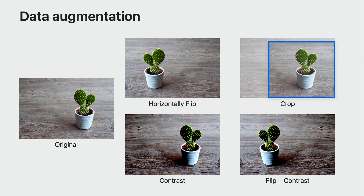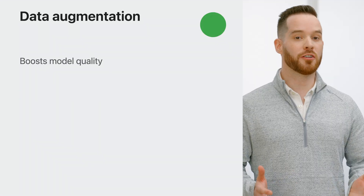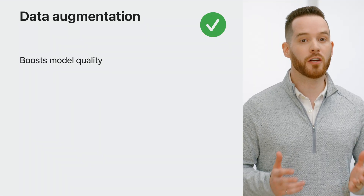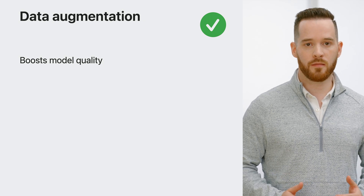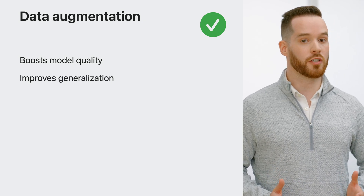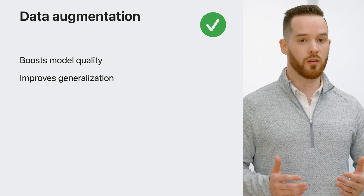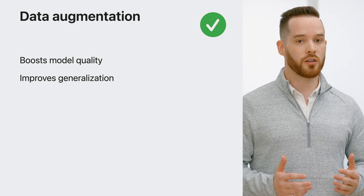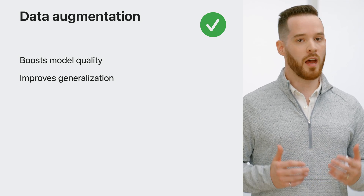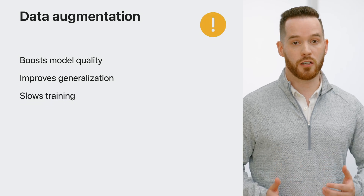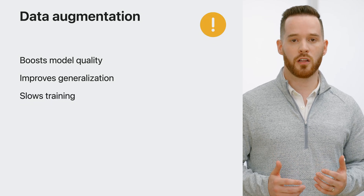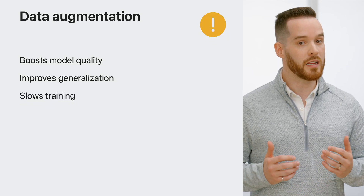In this example, I start with an image of a succulent and generate four variations. Transformations can be combined, like flipping and increasing the contrast. Augmentations can boost the quality of your model, especially when you have a small training dataset. You can use them to improve your model's generalization because it prevents your model from learning attributes like the exact location of an object in a scene. However, it's important to consider that training is usually slower because feature extraction happens at each training iteration.